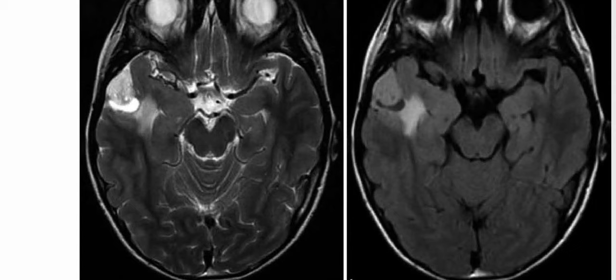Considering this key imaging finding of a cortically based cystic temporal lobe mass in a patient with seizures that is also enhancing, the top diagnosis is pleomorphic xanthoastrocytoma. In the differentials, you can include ganglioglioma, DNET (dysembryoplastic neuroepithelial tumor), or balloon cell cortical dysplasia (Taylor cortical dysplasia).